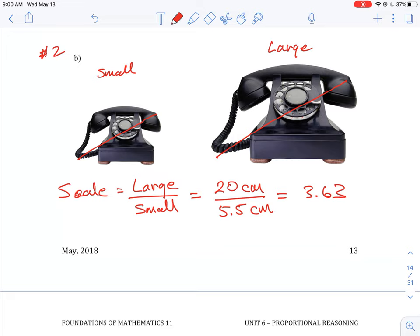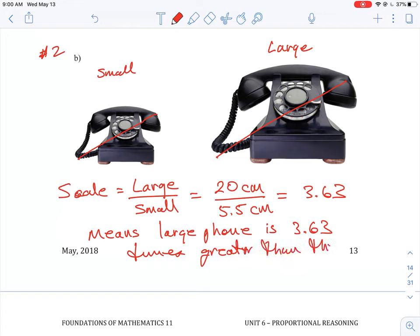That means the large phone is 3.63 times bigger than the small phone. This means that the large phone is 3.63 times greater than the small phone.